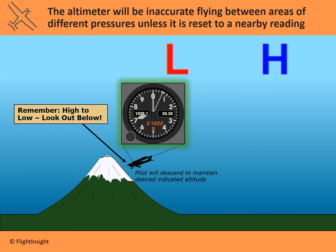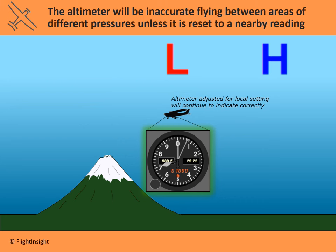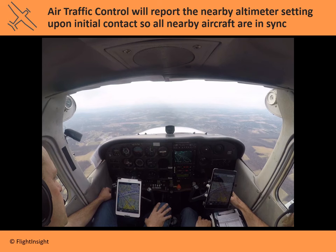If you're flying from an area of high pressure to low pressure, look out below — you could be flying lower than you think you are. The antidote is to reset your altimeter periodically to a nearby report. Instead of reading 30.30 inches of mercury, a properly reset altimeter will indicate the current sea level pressure of 29.22 and read correctly at 7,000 feet again. You can get a local altimeter setting by listening to a nearby METAR on an ATIS or AWOS frequency. Additionally, every time you contact air traffic control or get a handoff to a new controller, the first thing they'll tell you on initial contact is the altimeter setting for your area — syncing all aircraft to the same setting so they're not at varying altitudes.